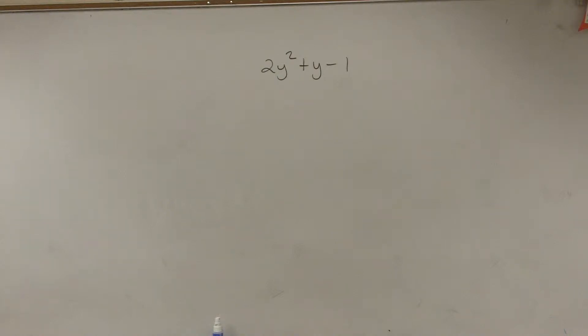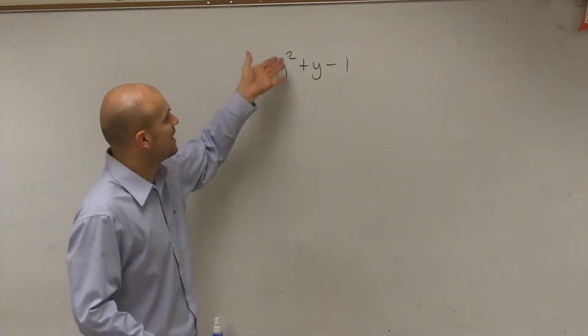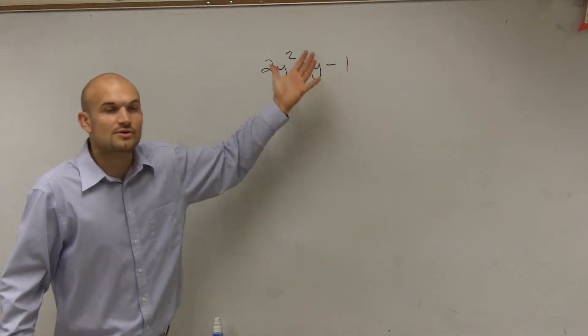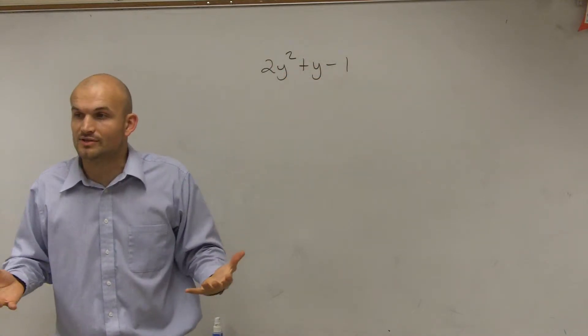All right, so what I'd like to do for this problem is, again, we have 2y squared plus y minus 1. So again, what we want to do is we want to factor this.